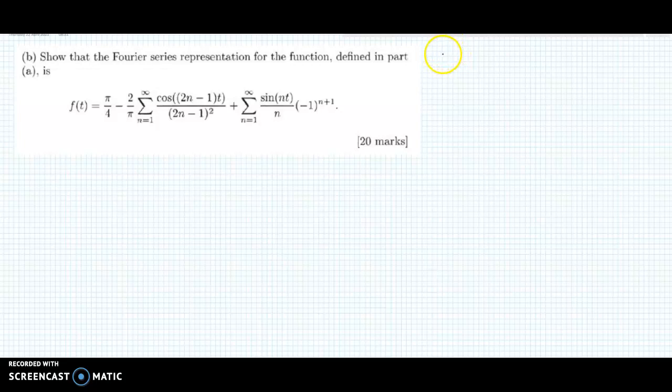Because we determined in the previous video that the function wasn't odd, it wasn't even, it was neither. This means because the function was neither even nor odd, we have to get A0, AN, and BN, and in this video we're going to get A0.